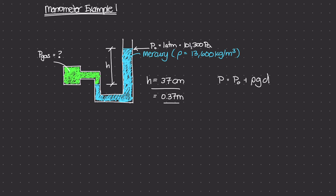We can use this hydrostatic pressure equation to figure out what the pressure along this horizontal line is. I'm going to call this pressure A and this pressure B, and we know that pressure A is equal to pressure B, and pressure B essentially is the pressure of the gas.